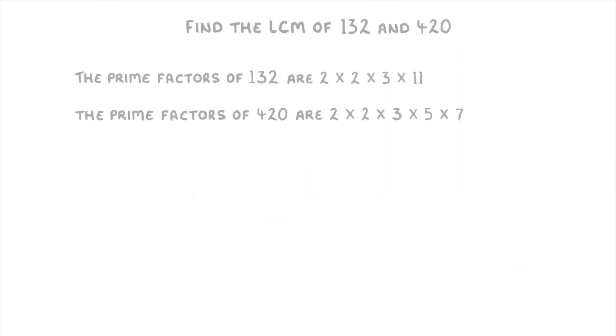Let's try one more before we finish. So this time, we're trying to find the lowest common multiple of 132 and 420. Just like before, we need to look at the prime factors of each and cross out all the ones that are the same in both lists. So we can cross out this two, this two, and this three. Then we multiply together all of these numbers that we have left. So 2 × 2 × 3 × 5 × 7 × 11, which would give us 4620 as our lowest common multiple.